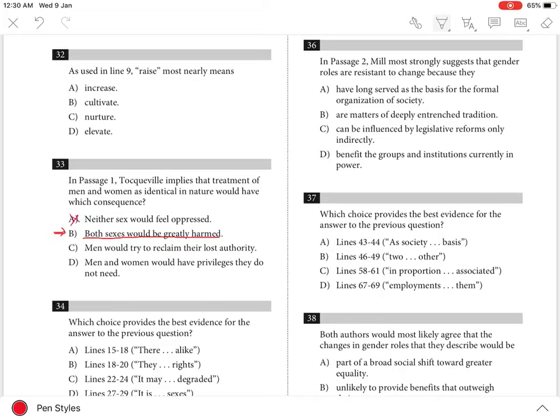Choice C is incorrect because Tocqueville does not address the issue of whether men might ultimately try to reclaim any authority they lost as a result of the treatment of both genders as identical.